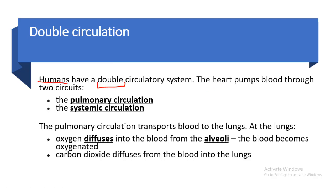In the double circulatory system, the heart pumps blood through two circuits. One is known as the pulmonary circuit, which is linked with the lungs. The other is the systemic circuit, which is linked with the whole body.